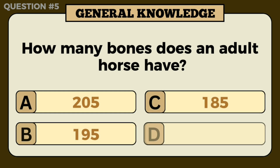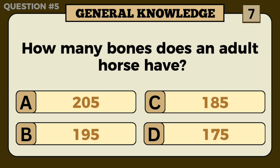How many bones does an adult horse have? Answer: A — 205.